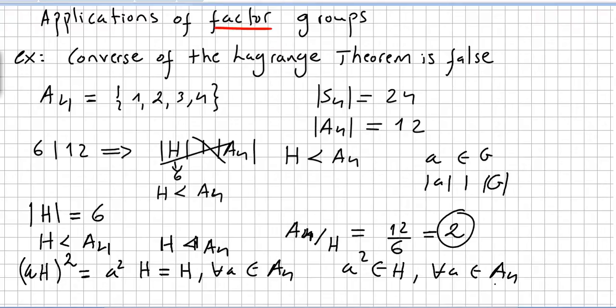So A squared should be in H for all A in the alternating group 4. So now you can pick any table. You have tables for these groups in my previous videos. And observe that A4 has 9 different elements of A squared. All those 9 elements should belong to H, to the subgroup.